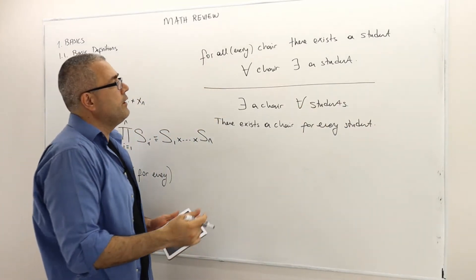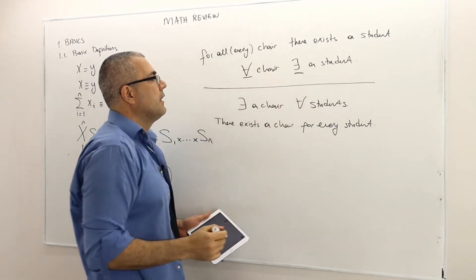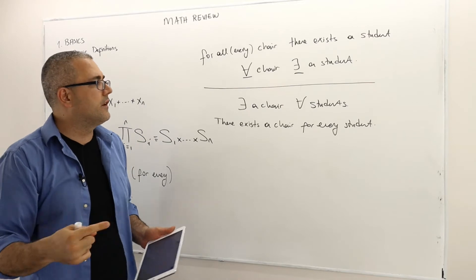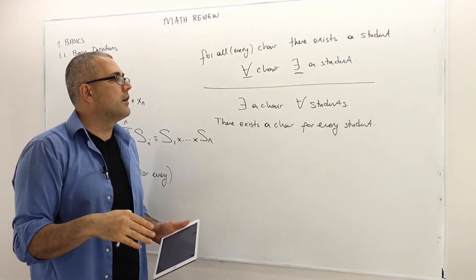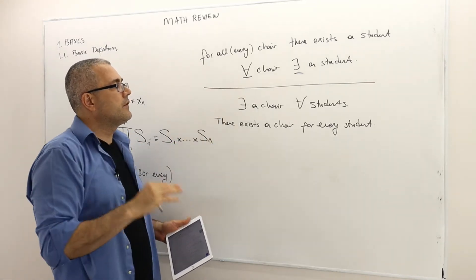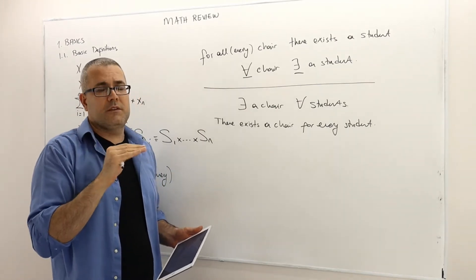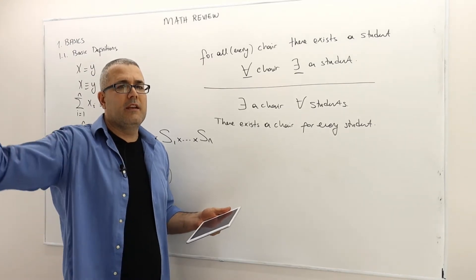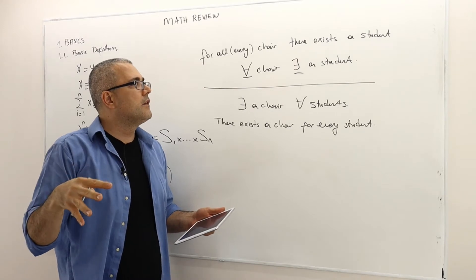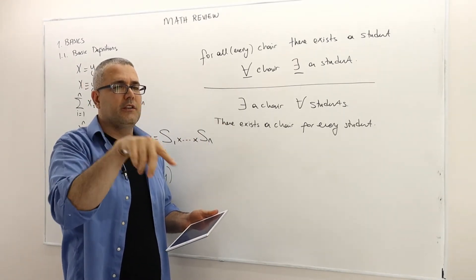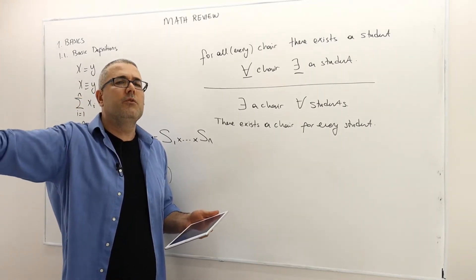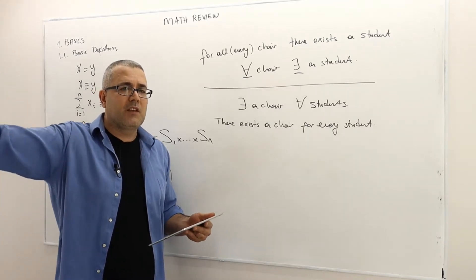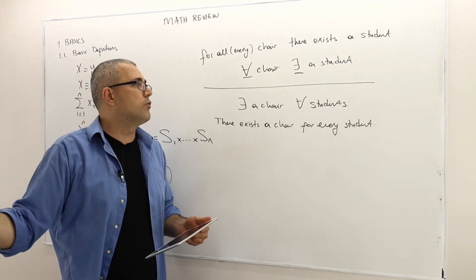So be careful when you put 'for all' and 'there exists' — the order matters. When you replace 'for all' and 'there exists', the meaning will generally change significantly. Here, for every chair in the classroom, there exists a student — that means suppose there is a full room of chairs, and some students are waiting outside. For every chair in this room, there is a student waiting outside. So probably the number of students outside is bigger than the number of chairs. The room will be full, and some students may be left outside.